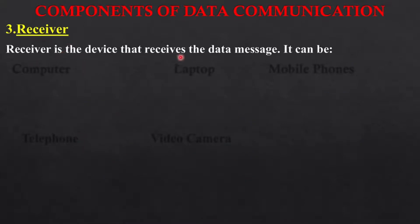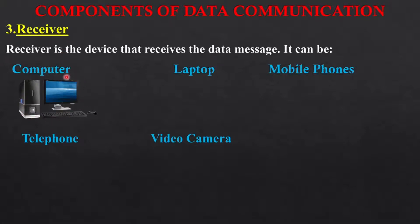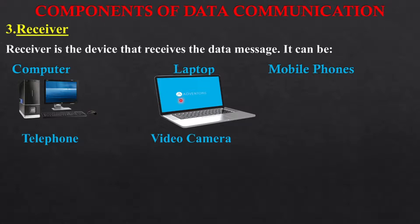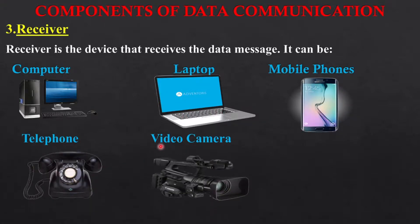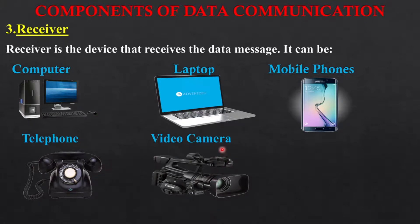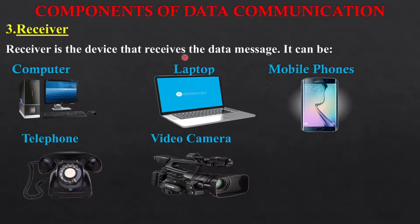The next component is receiver. The receiver receives the message that is being sent by the sender. The receiver can be a computer, a laptop, a mobile phone, a telephone, or a video camera. These are the electronic devices that can receive data. So the receiver is the device that receives the data message.